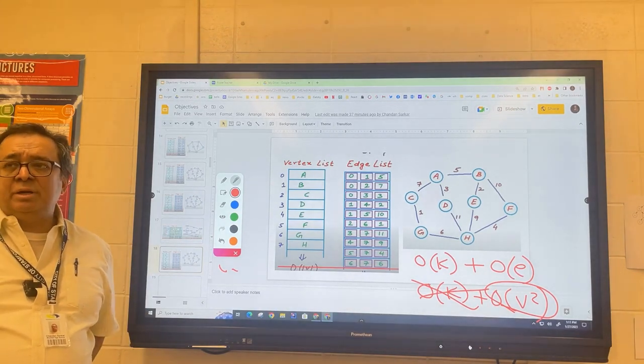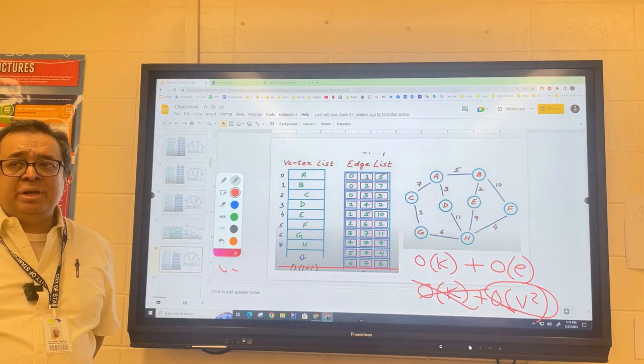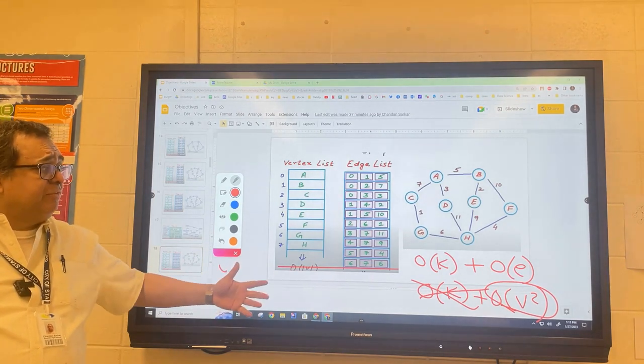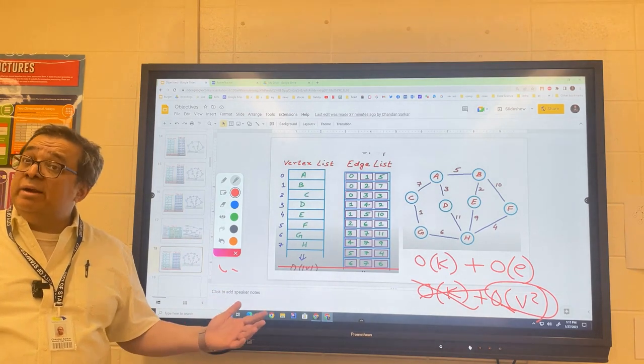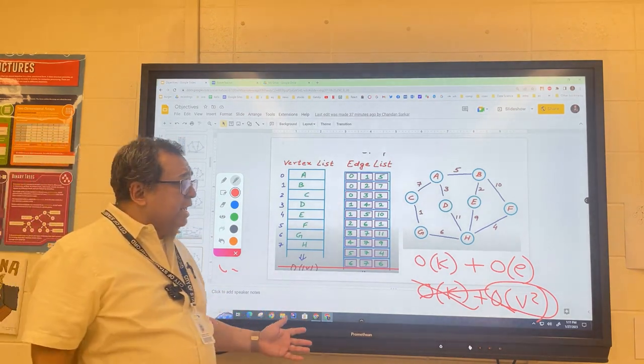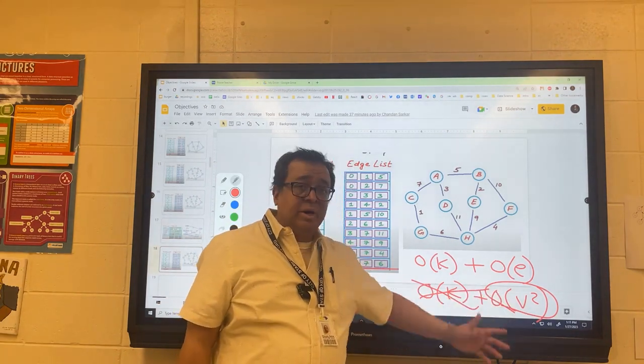And now we need to ask the question, is that good, is that bad? Good or bad? It's bad. It's bad. We shouldn't have to, when we look up and search for information, it shouldn't be in the order of V squared. We want it to be order of what? We want it, the best we're going to get is probably order of V.